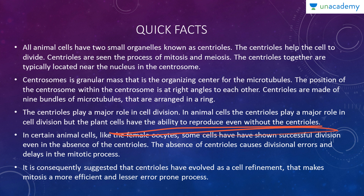Plant cells have the ability to reproduce even without centrioles — they are independent of centrioles and can initiate their own division without them. In certain animal cells like the female oocyte, successful division has been shown even in the absence of centrioles. However, the absence of centrioles causes divisional errors and delays in the mitotic process.